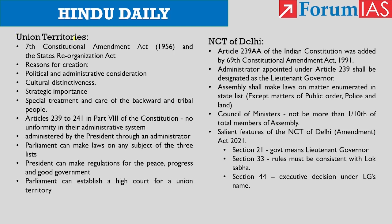First, regarding union territories: union territories were constituted in the year 1956 by the Seventh Constitutional Amendment Act and the States Reorganization Act. Some of these union territories have been elevated to statehood — they are the states of Himachal Pradesh, Manipur, Tripura, Mizoram, Arunachal Pradesh and Goa, which were formerly union territories.